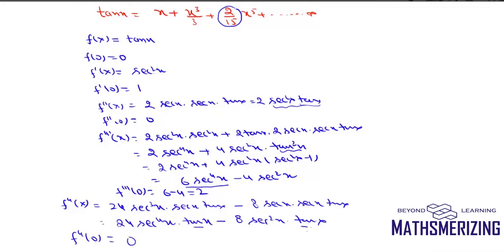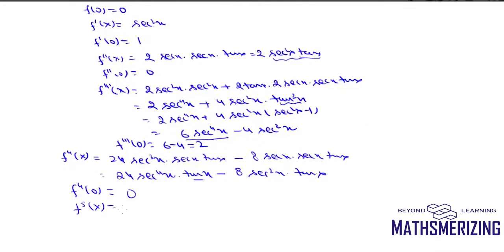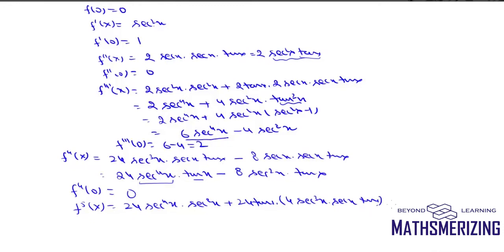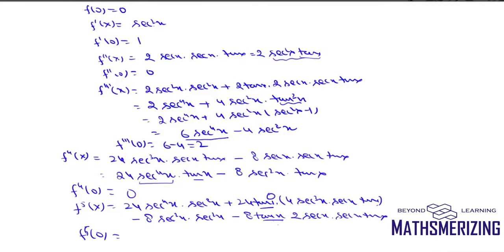Now I'll find the fifth derivative, again using the product rule. Differentiating 24sec⁴x · tan(x) gives 24sec⁴x · sec²x plus 24tan(x) · 4sec³x · sec(x)·tan(x). Differentiating −8sec²x · tan(x) gives −8sec²x · sec²x minus 8tan(x) · 2sec(x) · sec(x)·tan(x). At x = 0, all terms containing tan(x) vanish, leaving f⁵(0) = 24 − 8 = 16.